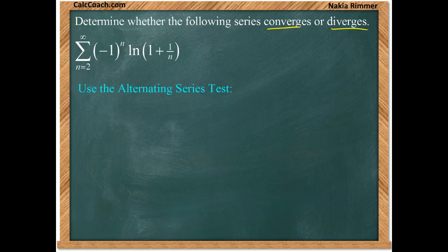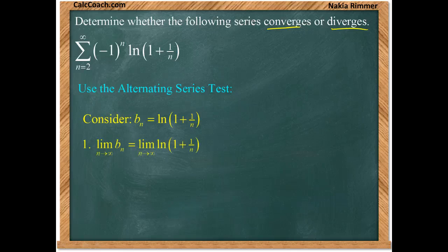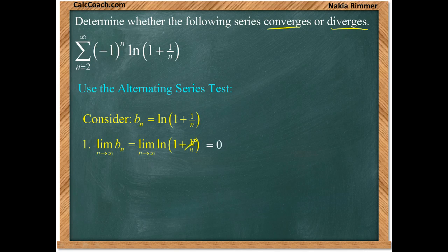Take off the alternating part. Deal with the b sub n being log of 1 plus 1 over n. Two things need to be true about this. The limit needs to be 0. As n gets big, 1 over n gets very small. 1 plus 0 would be 0. The natural log of 1, 0. Great.